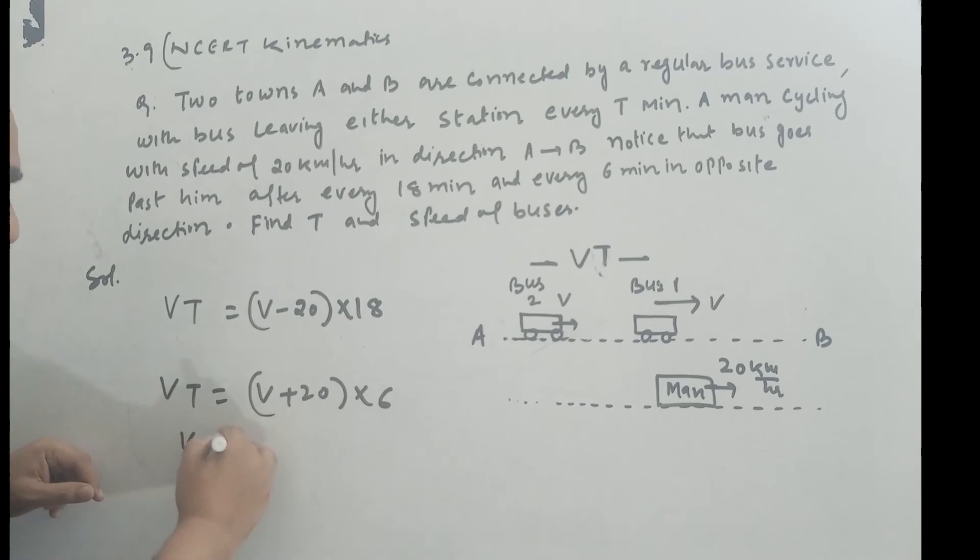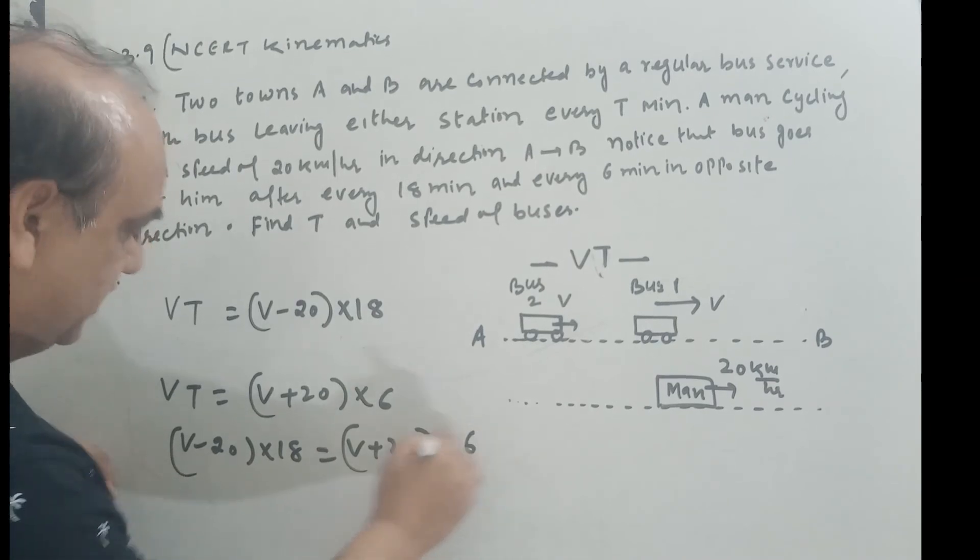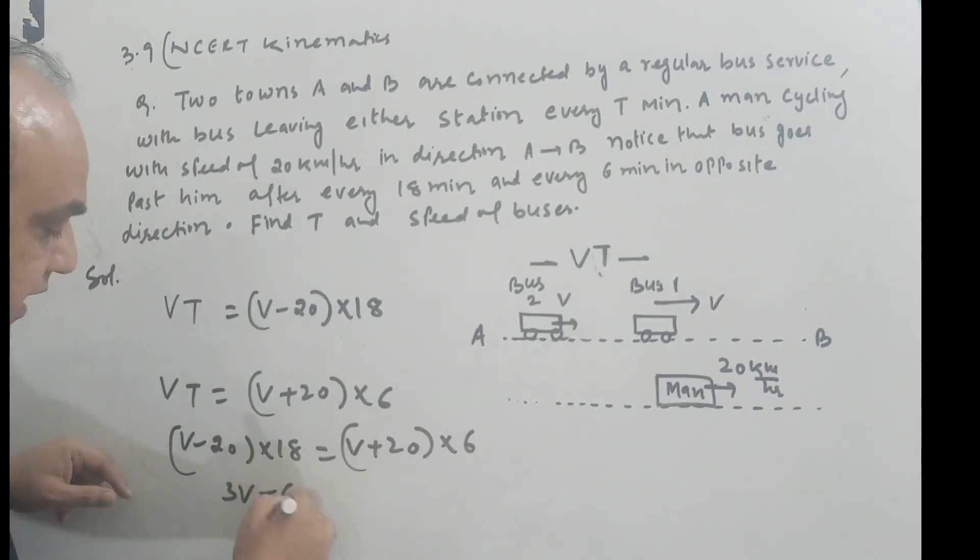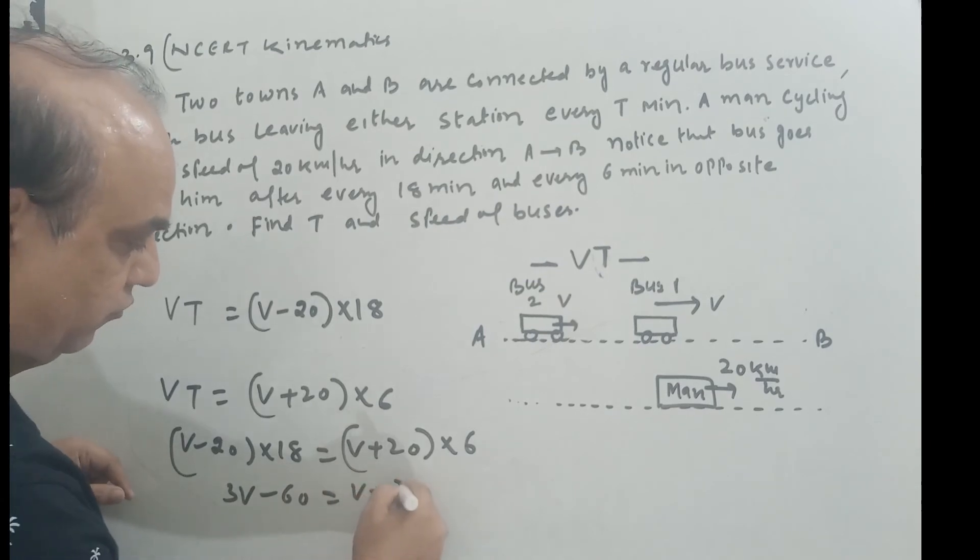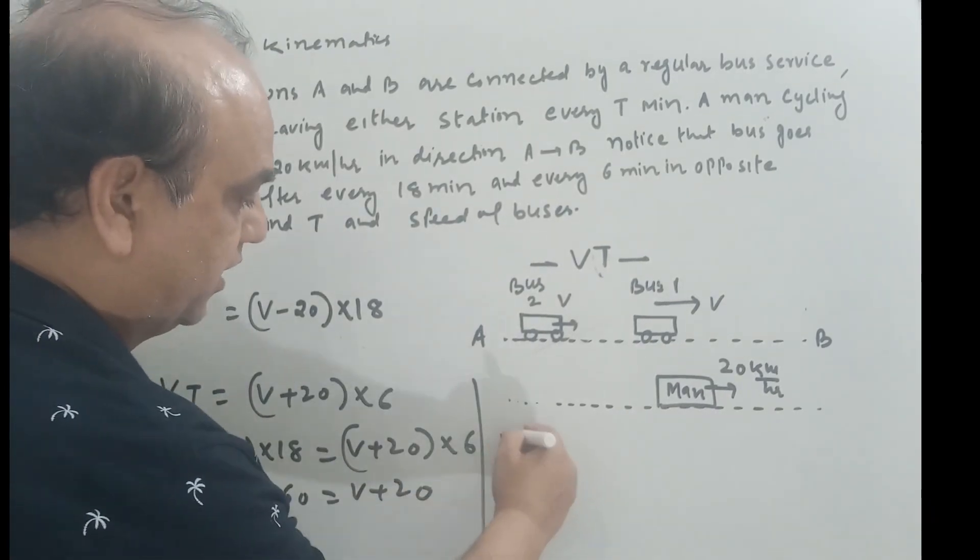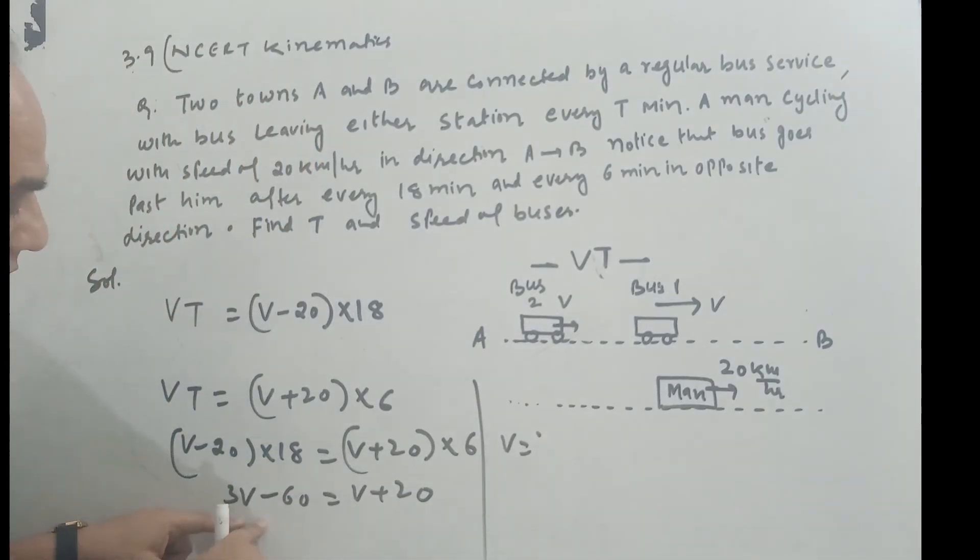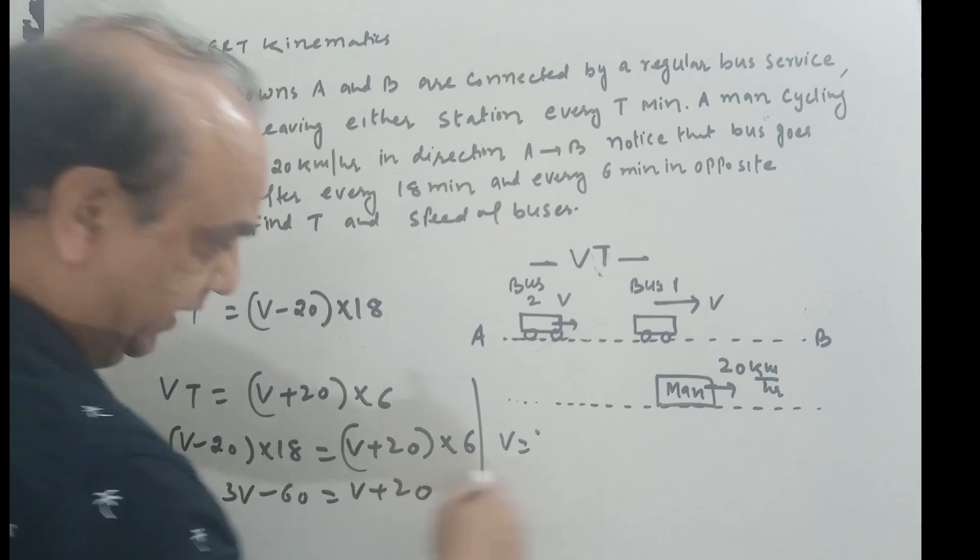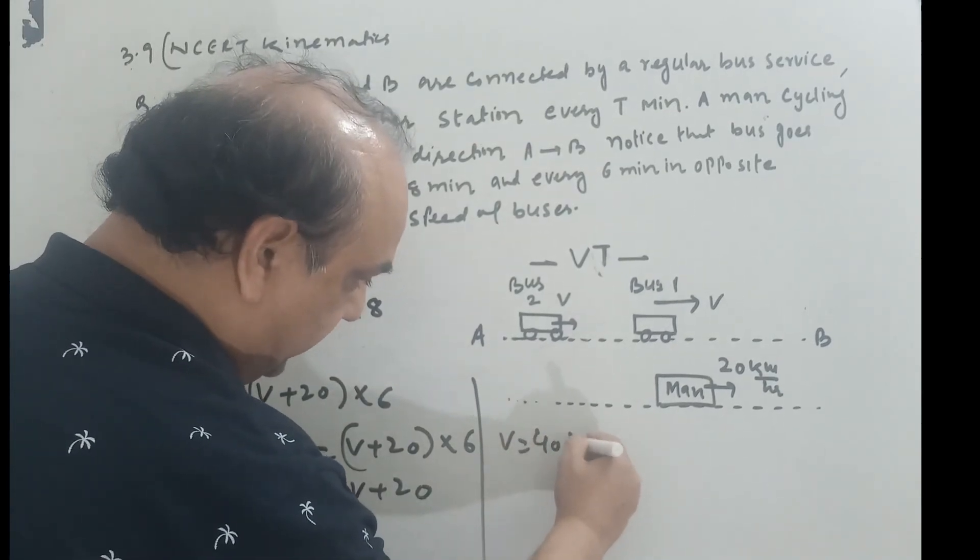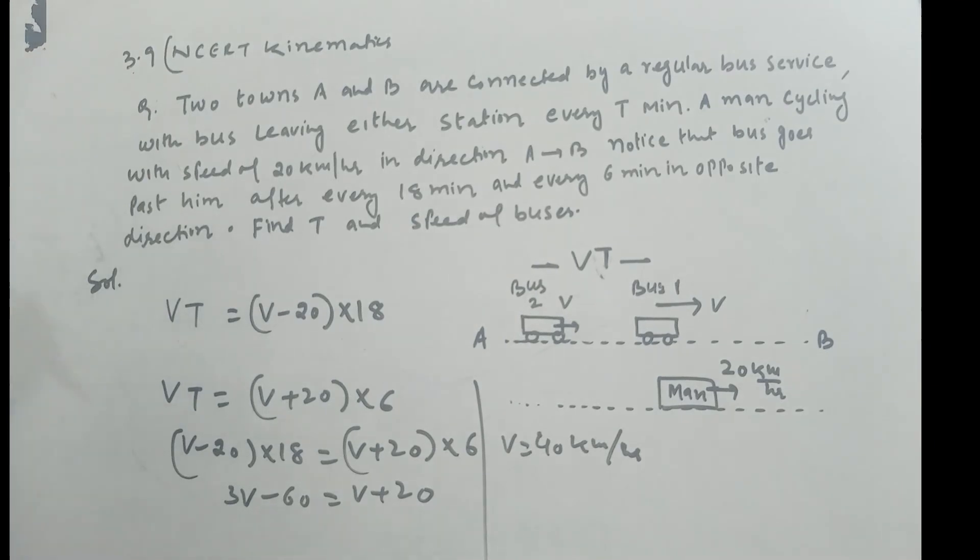So let's solve these. Equate them: V minus 20 into 18 equal to V plus 20 into 6. This is 3V minus 60 equals V plus 20. 2V equals 80, so V is 40 km per hour. This is the speed with which the buses are moving. Now we need to find T, right?